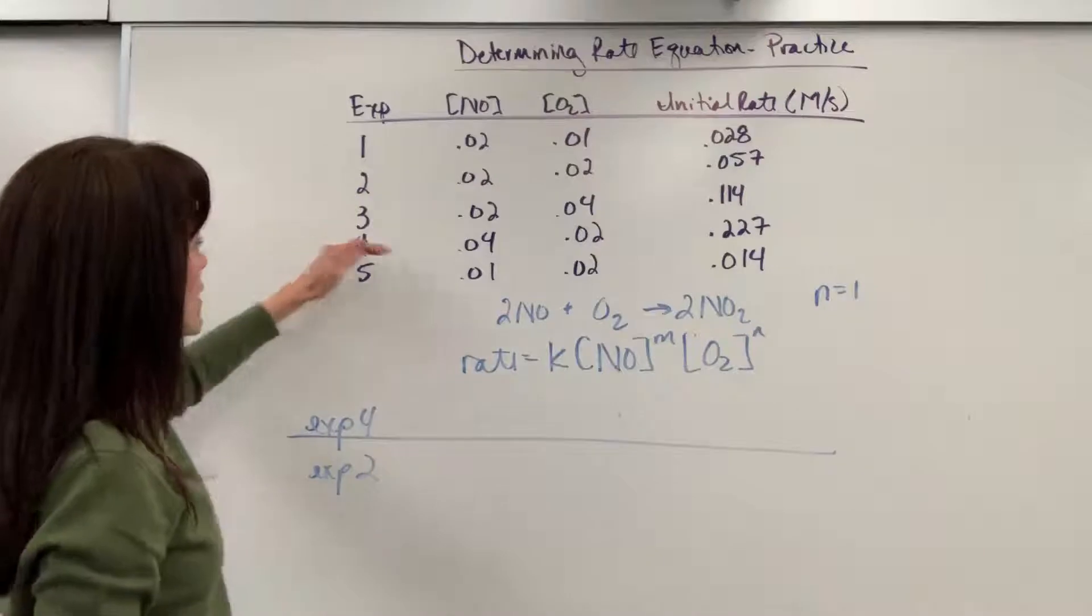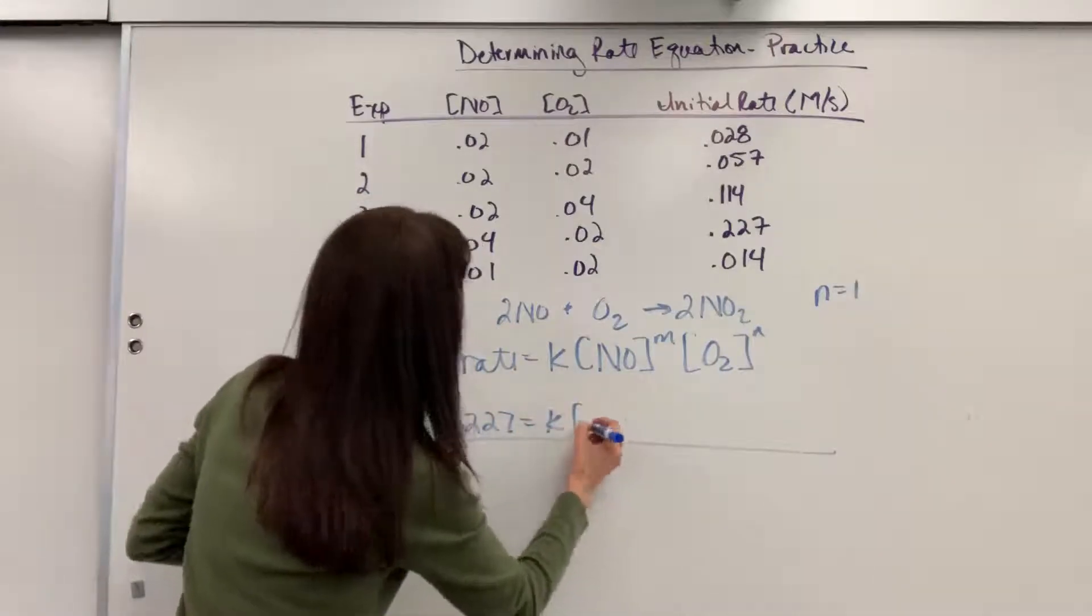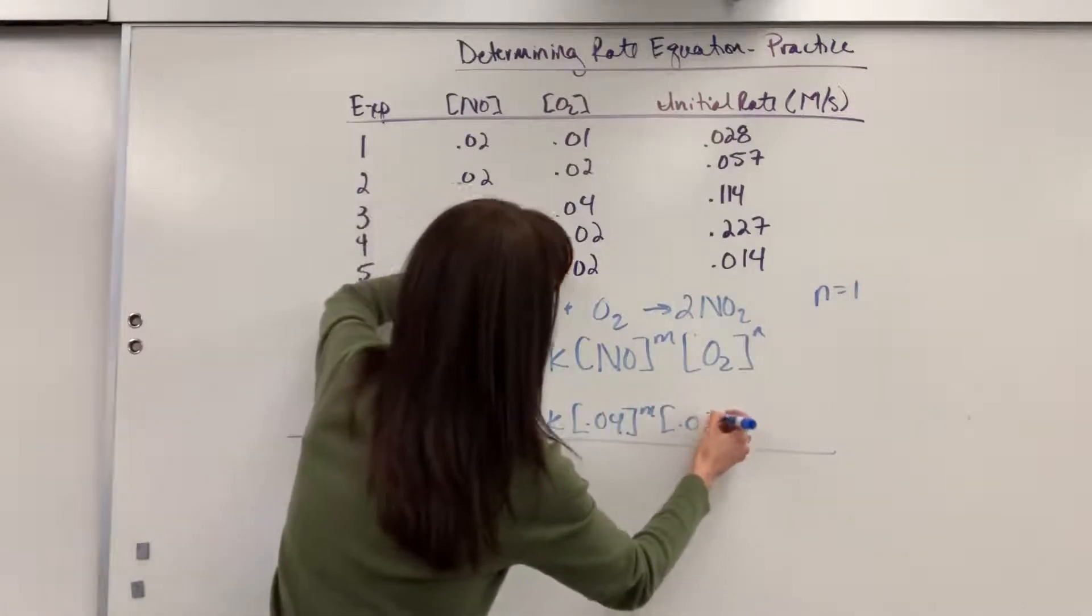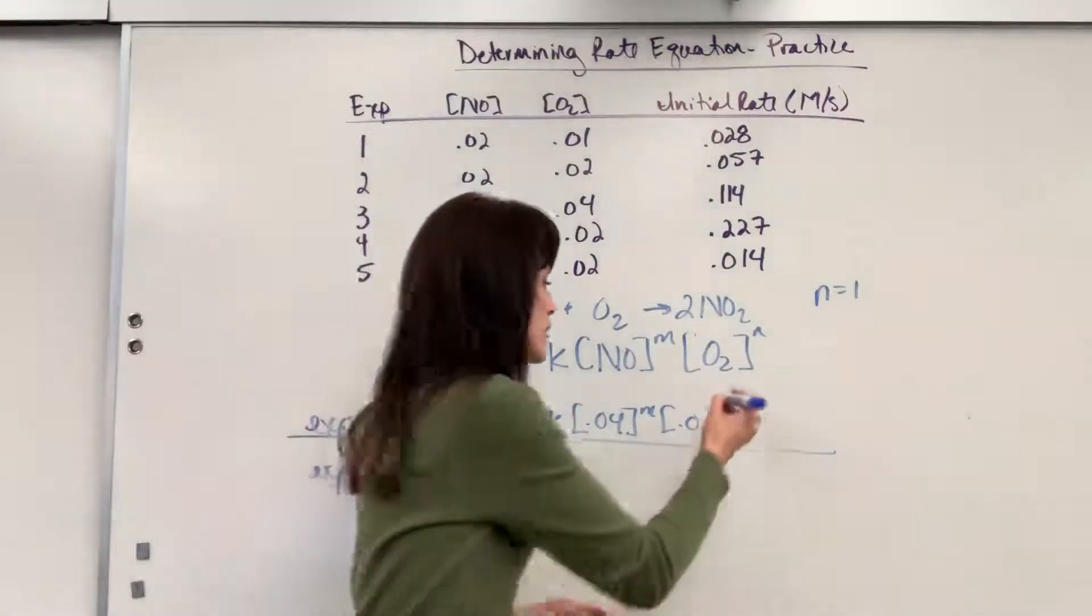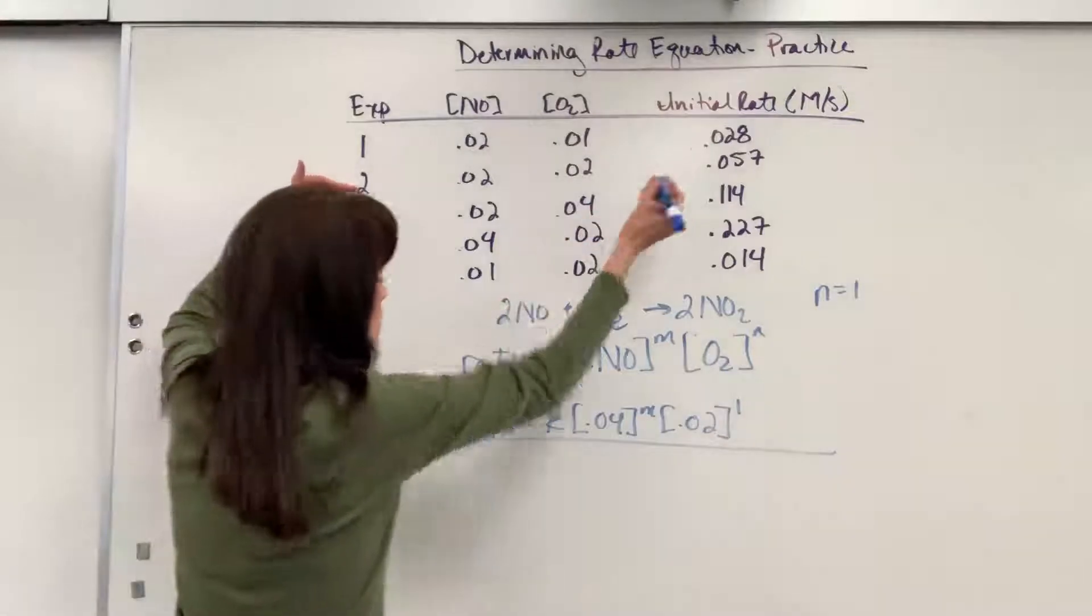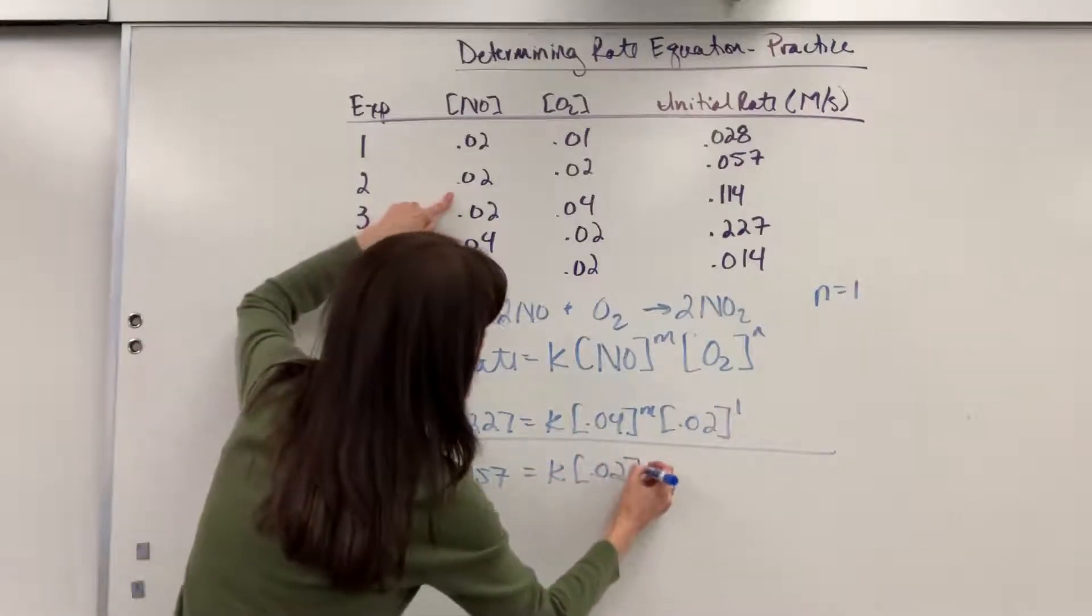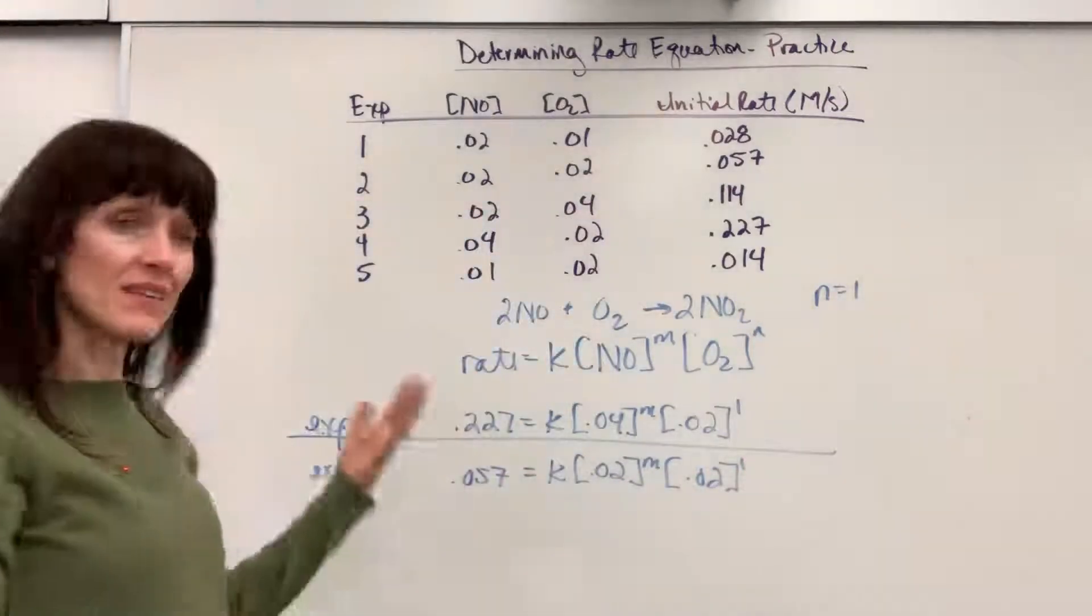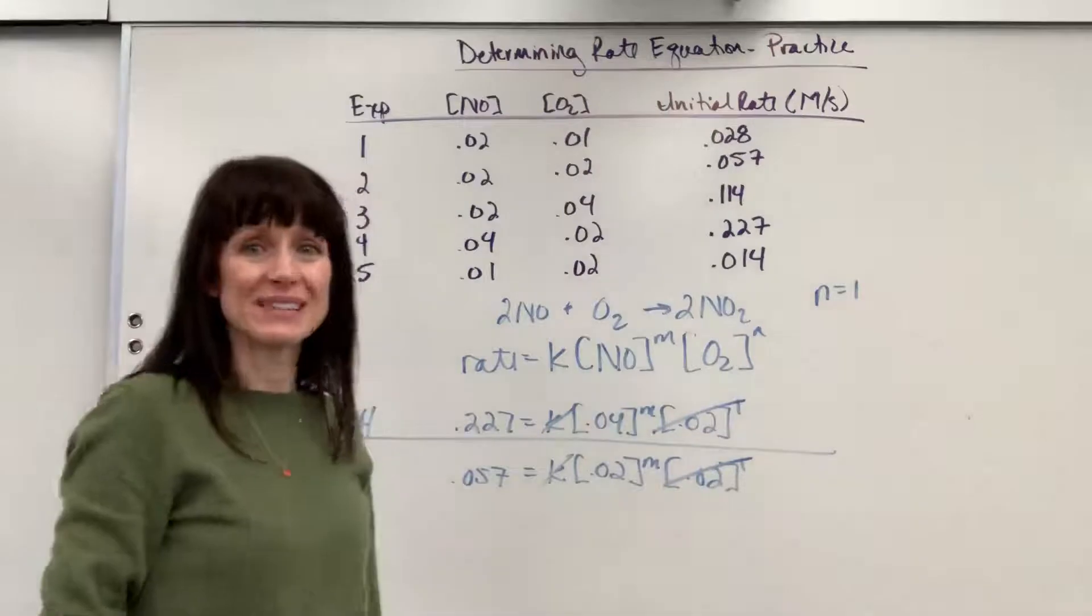So let's go ahead and plug experiment 4 into our rate law. The rate for experiment 4, 0.227 equals K times concentration of NO, 0.04, raised to the M times concentration of 0.02 raised to the N. Now I know what N is. I'll go ahead and put 1 since we know that N is first order. Experiment 2, the rate is 0.057 equals K times the concentration of NO is 0.02 to the M times the concentration of 0.02, and that's first order. What cancels? The K's, rate constant, that's the same, that will cancel, and we rigged it. 0.02 is going to cancel.